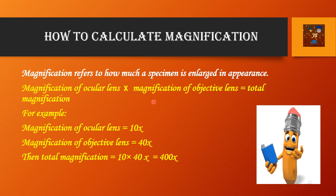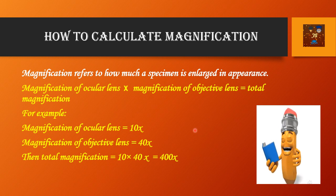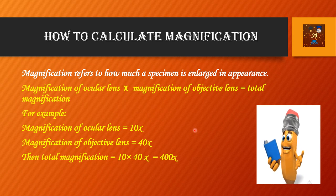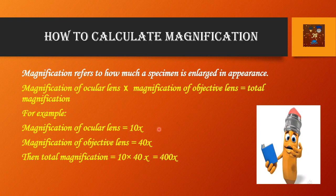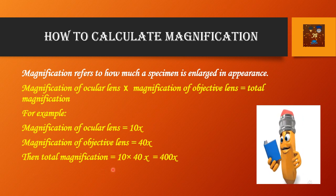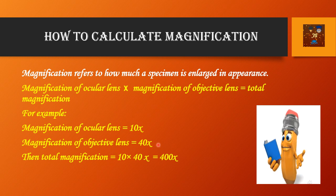Now the story of magnification. Magnification refers to how much a specimen is enlarged in appearance. The formula is: magnification of the ocular lens multiplied by magnification of the objective lens equals total magnification. For example, if the magnification of the ocular lens is 10x and the magnification of the objective lens is 40x, then total magnification is 10 × 40 = 400x. If the ocular is 5x and the objective is 10x, then magnification is 5 × 10 = 50x.